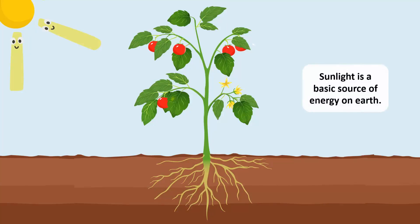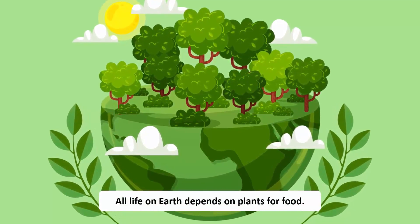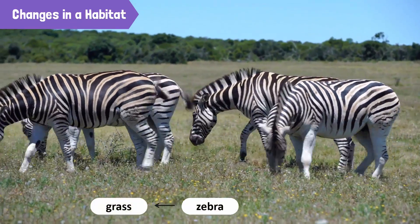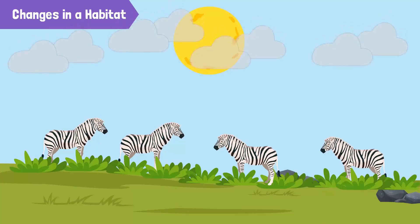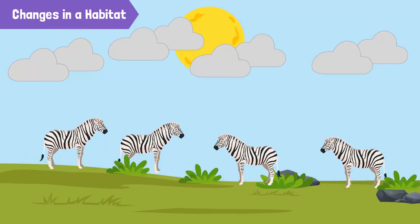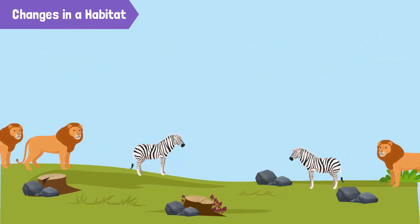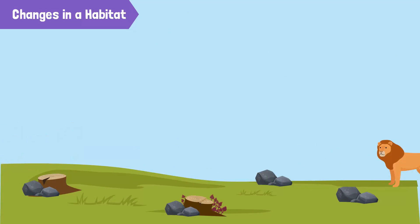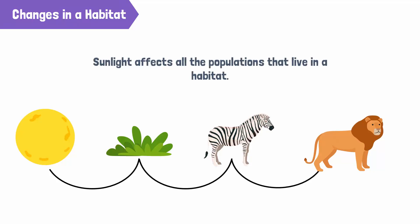Sunlight is a basic source of energy on Earth. All life on Earth depends on plants for food, directly or indirectly. For instance, zebras feed on grass and lions feed on zebras. If there is less sunlight, less grass will grow. If there is less grass, then the zebra population will decrease, affecting the lion population as well, because they will have no zebras to eat. Through these feeding relationships, we can see that sunlight affects all the populations that live in a habitat.